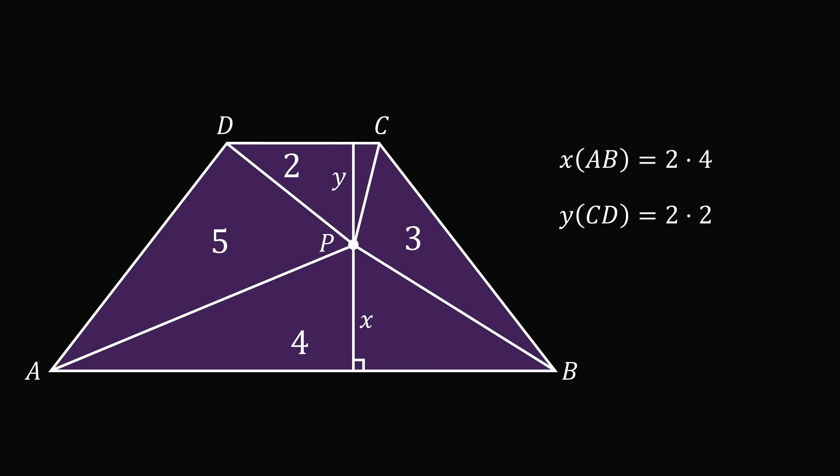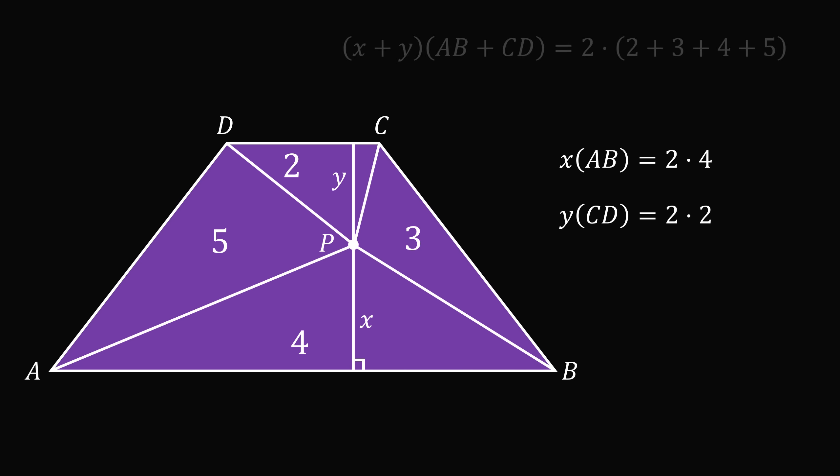Then consider the entire trapezoid. Considering its area, we have the quantity x plus y multiplied by the quantity AB plus CD is equal to 2 multiplied by 2 plus 3 plus 4 plus 5.